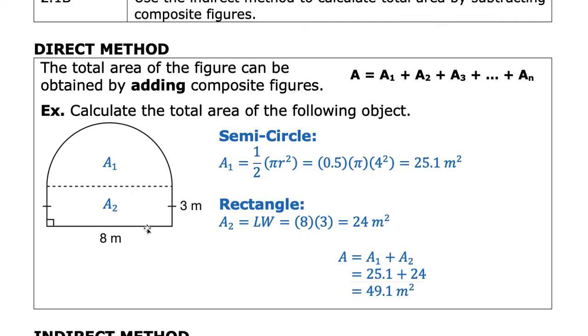So if we were looking at this shape, we could say that there's a rectangle at the bottom and a semicircle, meaning half of a circle on top. And to get the area, we can add the parts together to get the total area.